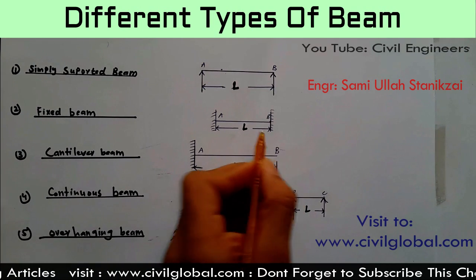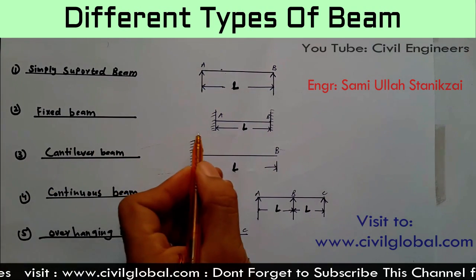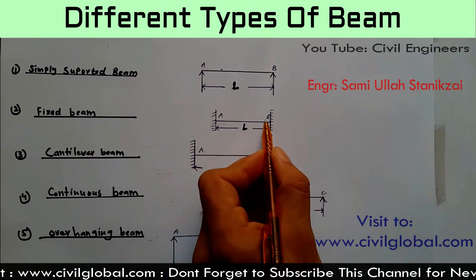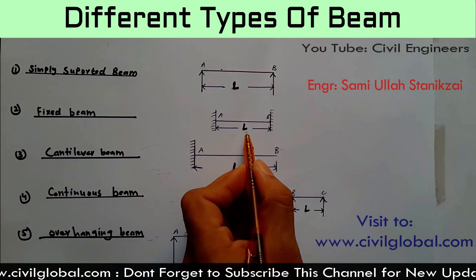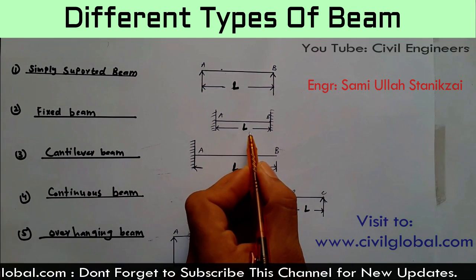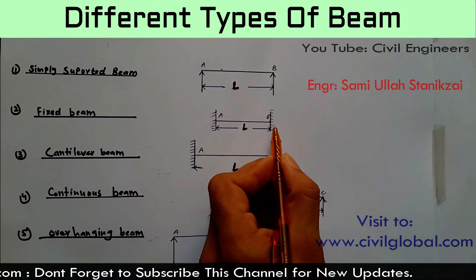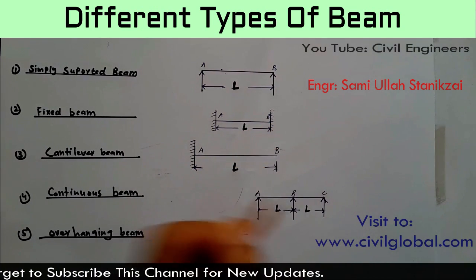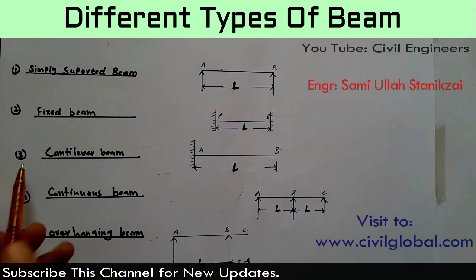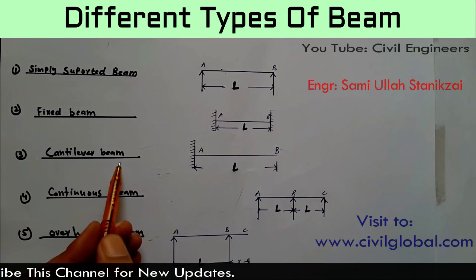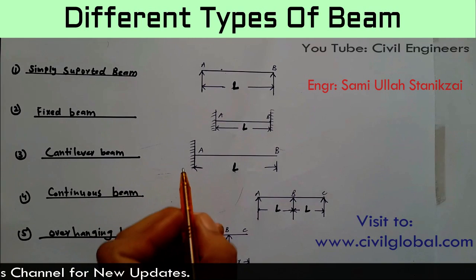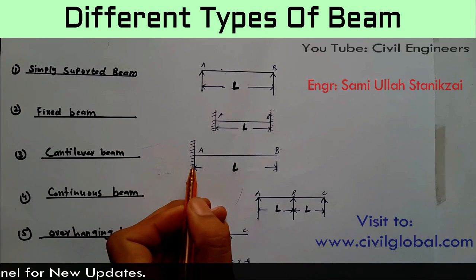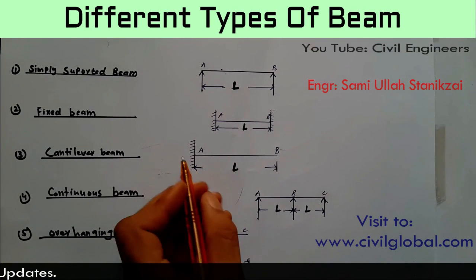The second one is the fixed beam. A beam which is fixed at both ends is called a fixed beam. A and B represent the ends, and this is the length of the beam fixed at both ends.